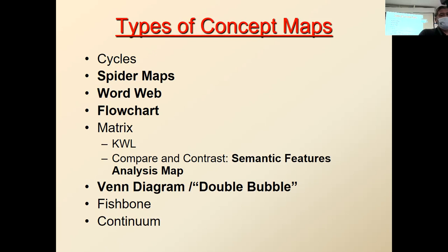So spider maps, word webs, flow charts. This one, the fourth one, the semantics features analysis grid. It's actually a very long teacher name for a good table. Sometimes it's best to organize your information in the form of a table. And then we have the event diagram or the double bubble.